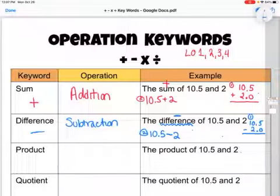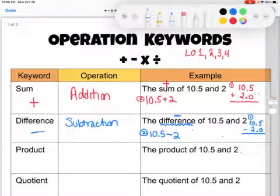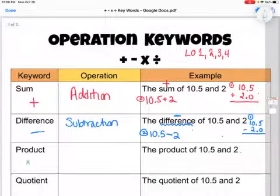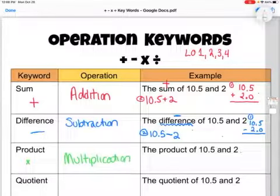The third keyword is product, and product means multiplication. I wrote the little X there, even though you won't really see that X. The ways you'll also see it are with parentheses or maybe a little dot. So we have the product of 10.5 and 2.